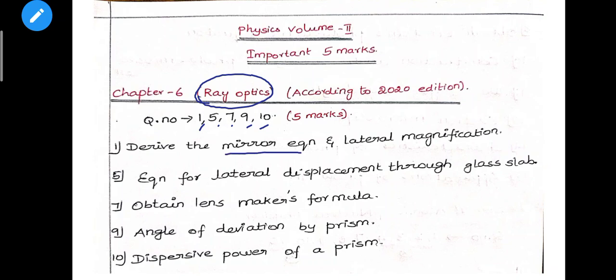Derive the mirror equation - this is the important question. Previously it was a public exam question. Mirror equation and lateral magnification. Equation for lateral displacement through a glass slab. Lens maker's formula - this is the 7th question, very important. Next, prism - dispersive power omega. Angle of deviation D = I1 + I2. Derivation triangle. This is Ray Optics Chapter 6 important 5 marks according to the 2020 syllabus.